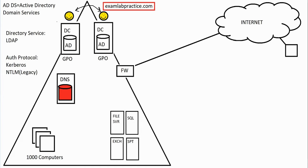Then you have USMT, User State Migration Tool. It's a command-line tool with two programs — scan state and load state — used for migration. The scenario is a user with an old, outdated computer getting a new one. Scan state backs up all their data to wherever you want — a flash drive or across the network. Then load state restores everything to the new computer, putting it as closely as possible to how it was on the old machine, even across different OS versions.